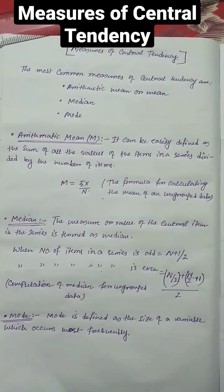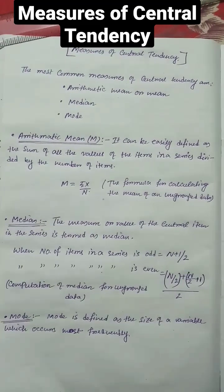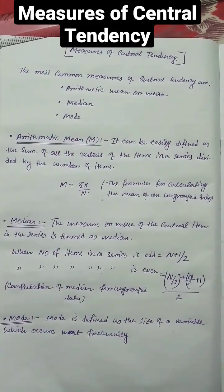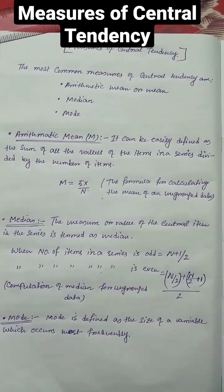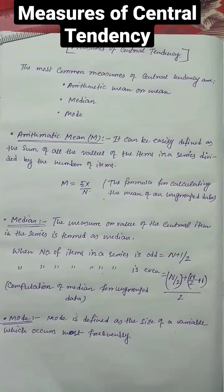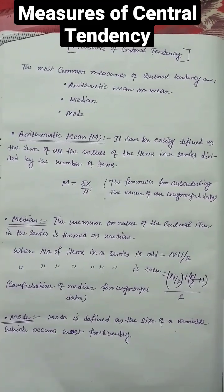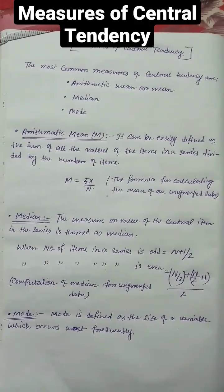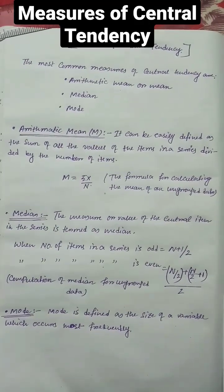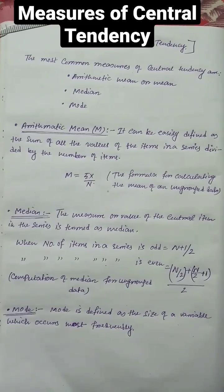Arithmetic mean can be easily defined as the sum of all the values of the items in a series divided by the number of items. The formula for calculating the mean of an ungrouped data is M = ΣX/N.